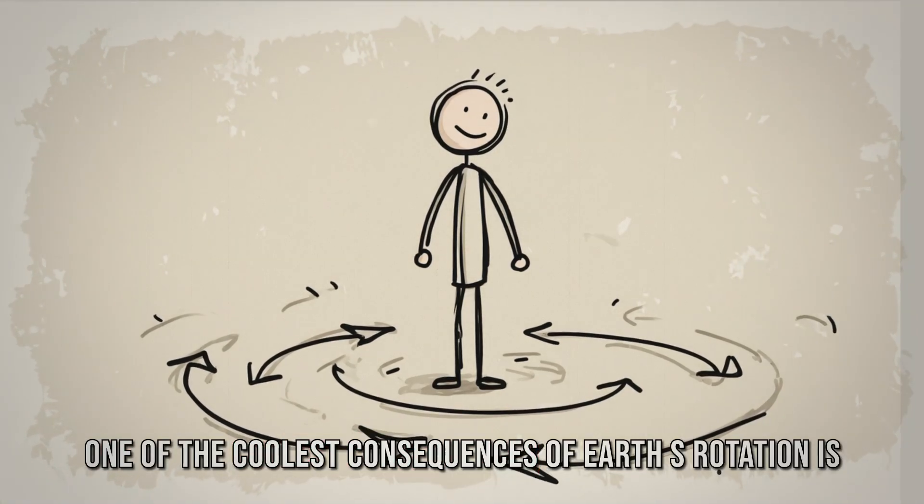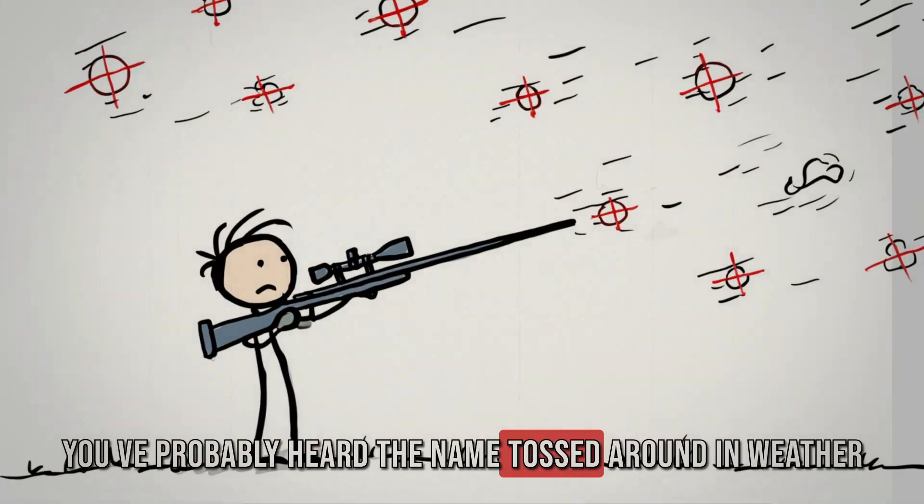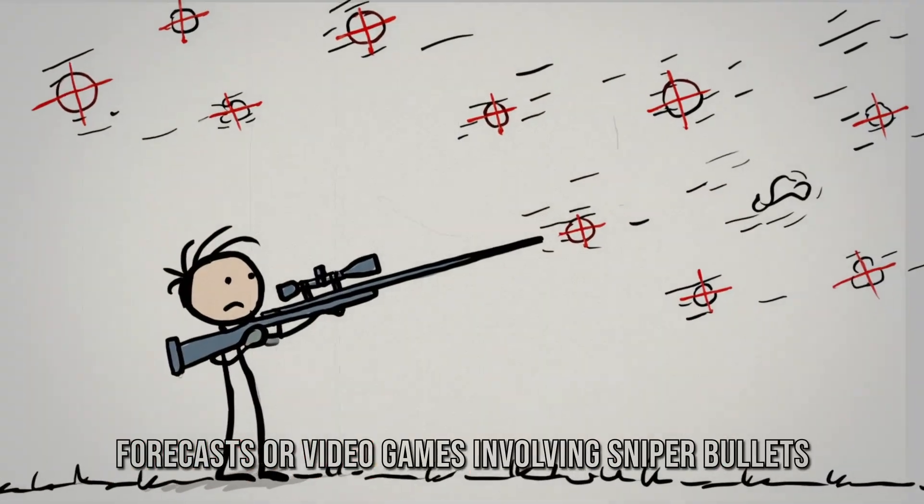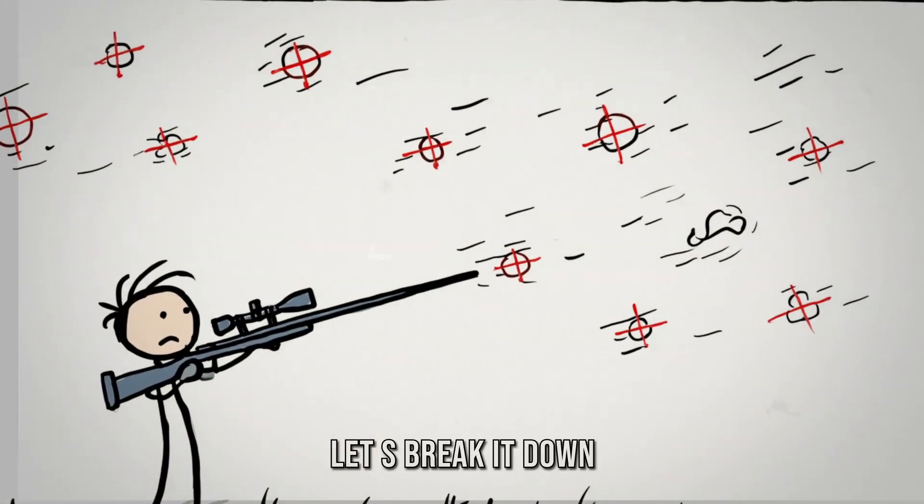One of the coolest consequences of Earth's rotation is the Coriolis effect. You've probably heard the name tossed around in weather forecasts or video games involving sniper bullets. But what is it really? Let's break it down.